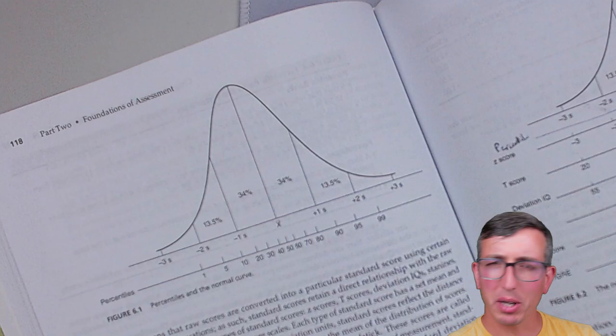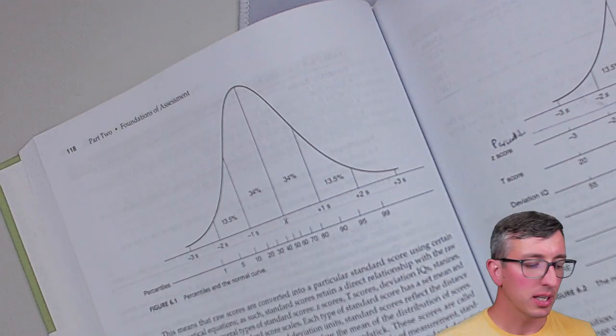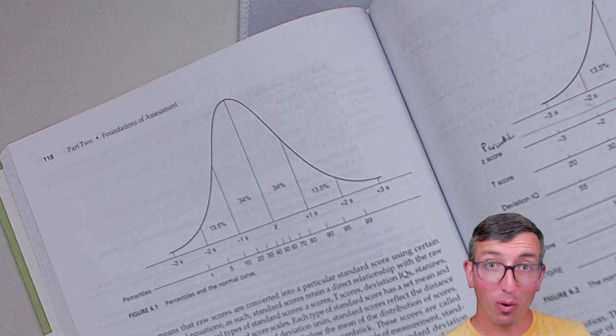Try this one: if somebody scored in the 26th percentile, what percentage of the population scores below? 26% are going to score below that person, and 74% are going to score above. That's how we use that information. You'll see percentiles come up when we look at actual assessment results from the book.